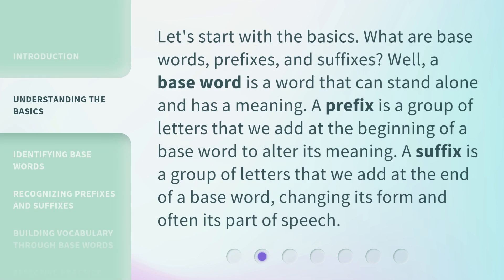Let's start with the basics. What are base words, prefixes, and suffixes? Well, a base word is a word that can stand alone and has a meaning. A prefix is a group of letters that we add at the beginning of a base word to alter its meaning. A suffix is a group of letters that we add at the end of a base word, changing its form and often its part of speech.